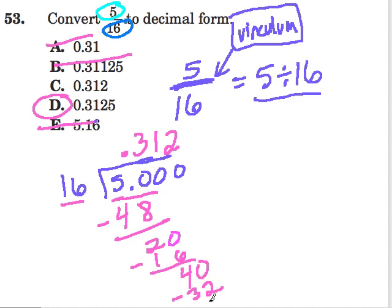Because we have 40 minus 32 is 8. And we can think of 80 as we carry down our last 0. And 16 goes into 80 five times.